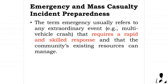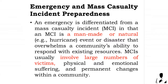The term emergency usually refers to any extraordinary event, for instance a multi-vehicle crash, that requires a rapid and skilled response and that the community's existing resources can manage. An emergency is differentiated from a mass casualty incident (MCI). An MCI is a man-made or natural event — for instance a hurricane — that overwhelms a community's ability to respond with existing resources. MCIs usually involve large numbers of victims, physical and emotional suffering, and permanent changes within a community.